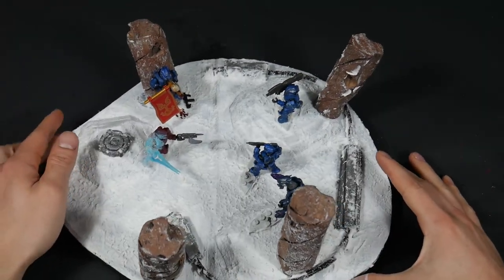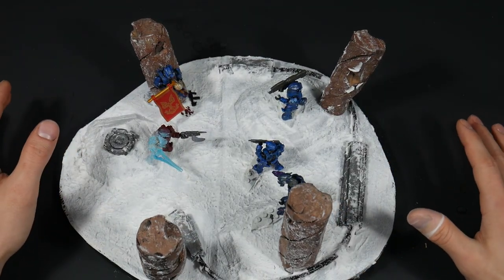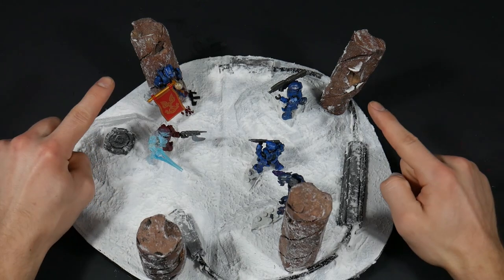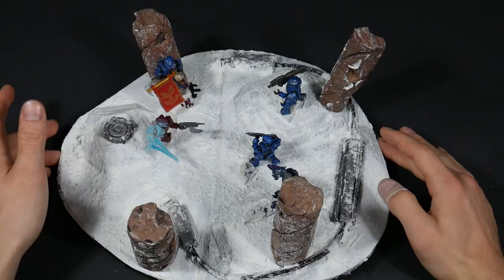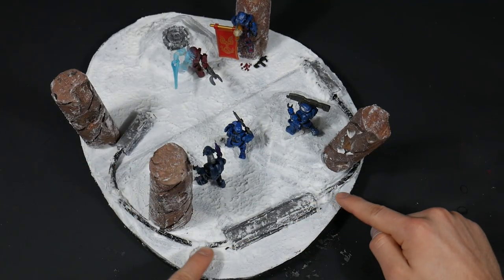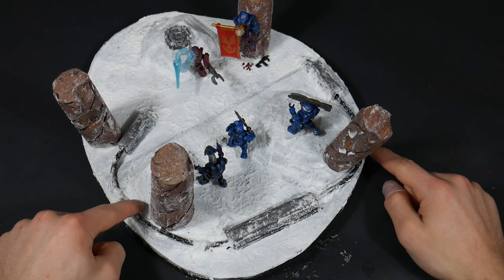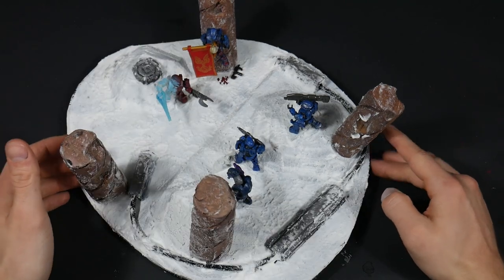All right guys here it is, my red versus blue halo 3 themed diorama. The stone pillar idea was from halo 2 kind of. I just kind of had that stone pillary halo 2 vibe and then I had this weird wire kind of going around and this wire was just a jump rope cable that I've never used really so I just cut it up.